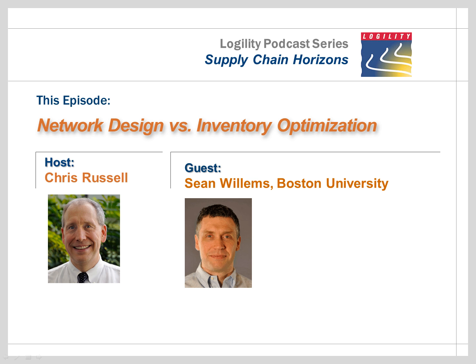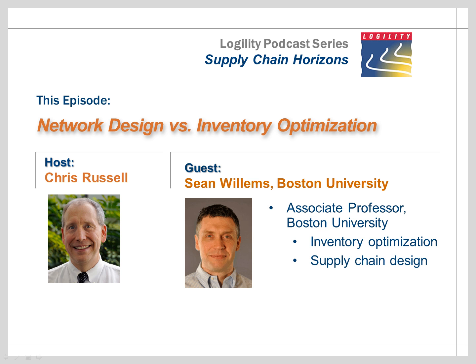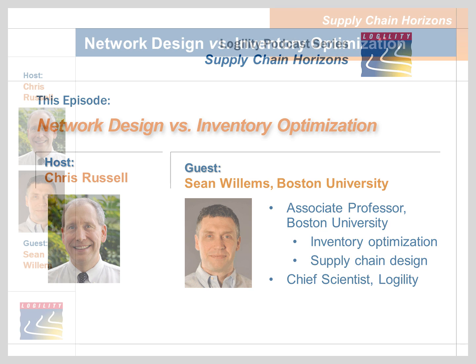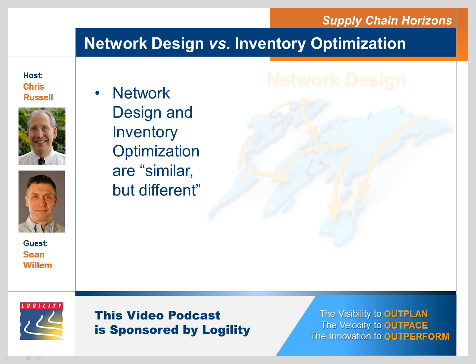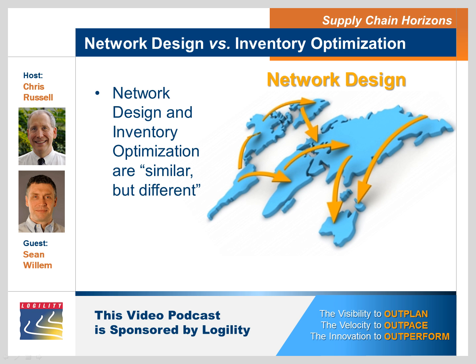Chris: So why don't you give us 50 words or less on who you are and what you do? Sean: I'm an associate professor at Boston University, working in the area of inventory optimization and supply chain design, and I'm also the chief scientist at Legility, where we have implemented this software in practice. I wanted to talk to you today about network design vis-à-vis multi-echelon inventory optimization. Companies seem confused about the differences — they seem similar but different. What's your take on that?